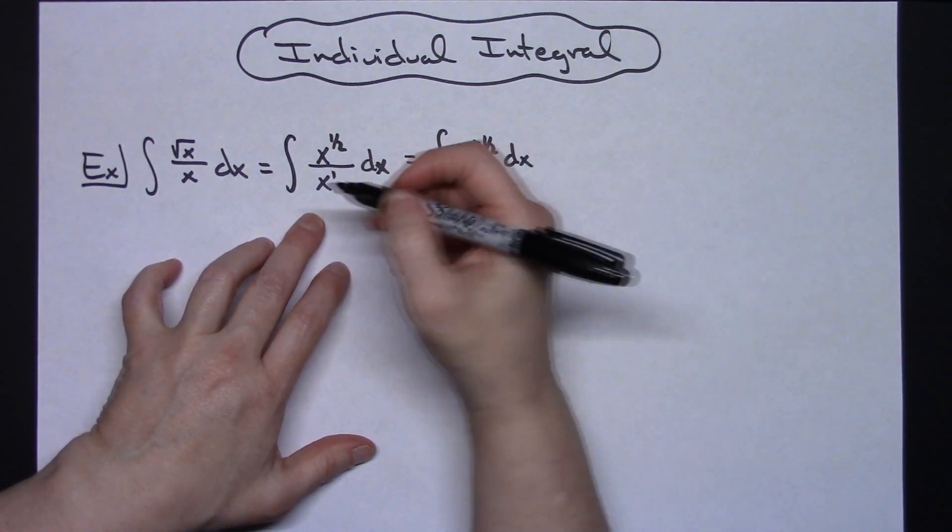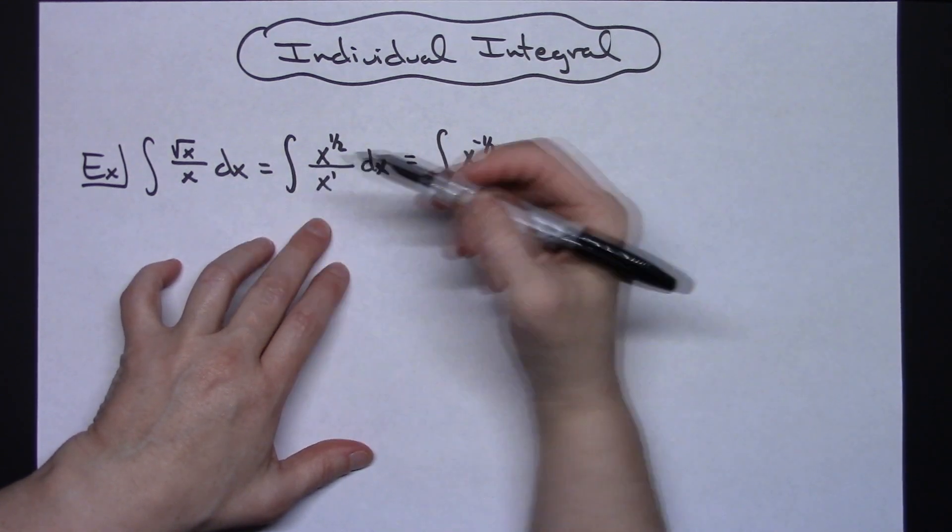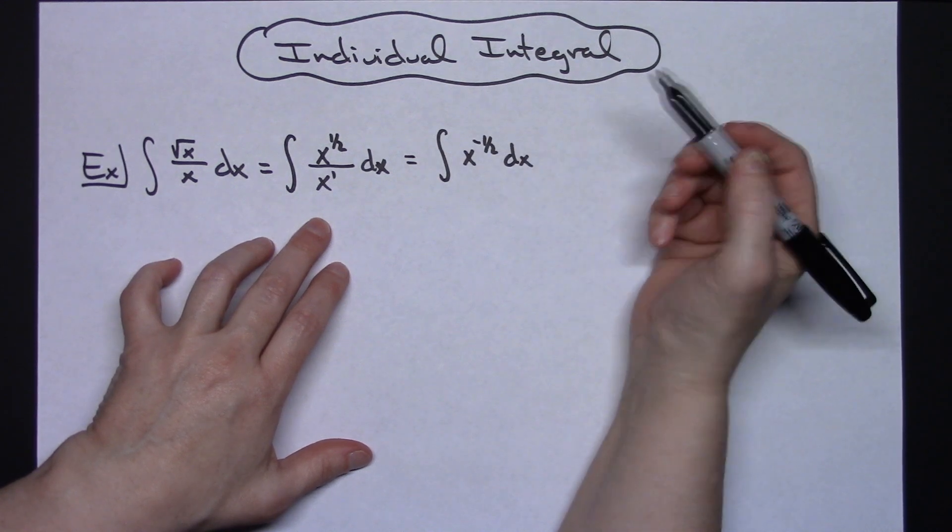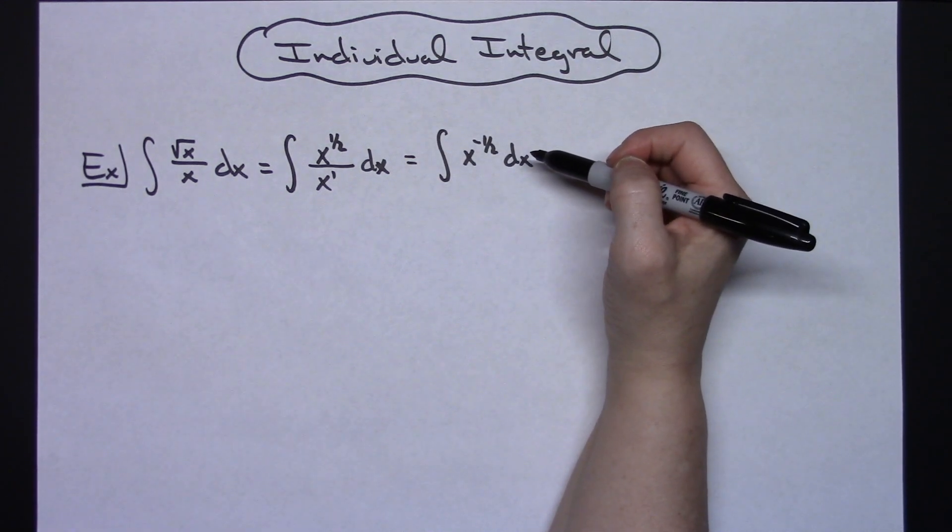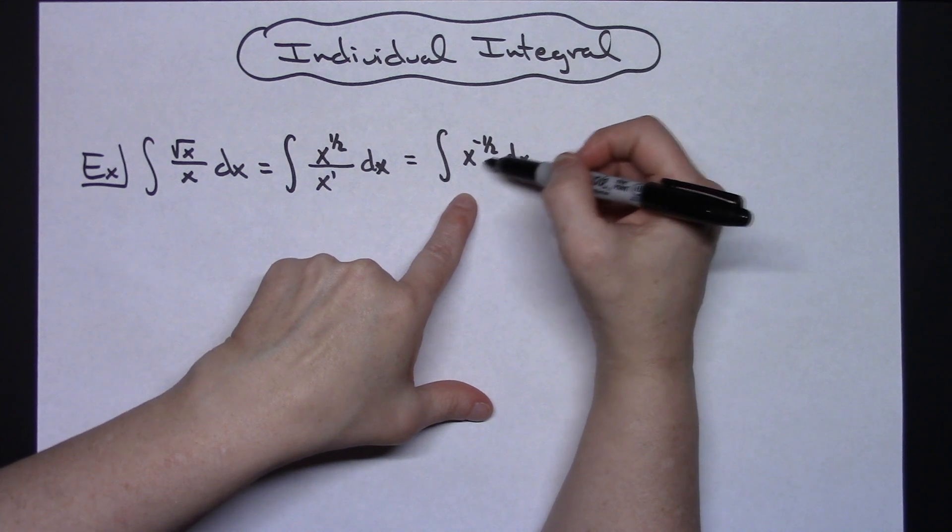Doing that type of algebra first on that original quotient there turns the integral then into a really simple integral to begin with here.